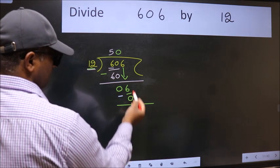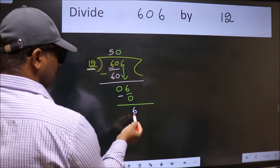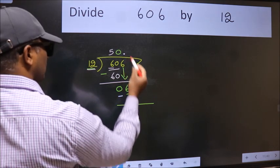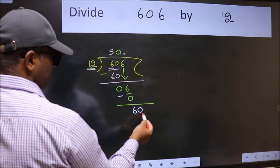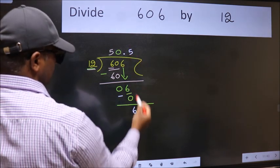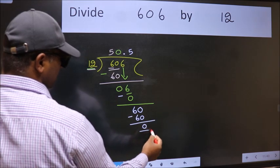Over here, we did not bring any number down, and 6 is smaller than 12. So now we can put dot and take 0. So 60. When do we get 60 in 12 table? 12 times 5 is 60. Now we subtract, we get 0.